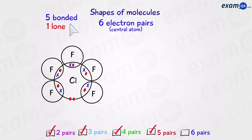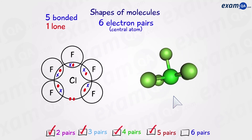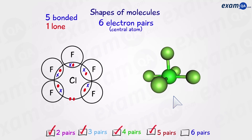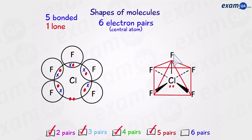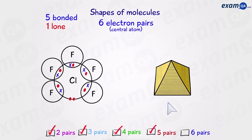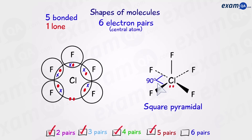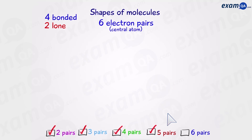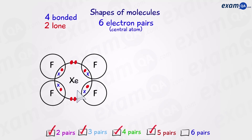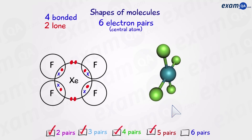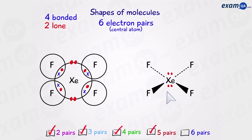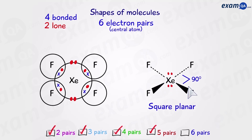Five bonded pairs and one lone pair in the family of six gives a shape you can think of almost like a pyramid — four fluorine atoms make the base and one makes the apex. The bond angle is 90 degrees, and this is called square pyramidal. Four bonded pairs and two lone pairs gives a shape where two bonds come towards us and two go away, with an angle of 90 degrees. This is called square planar.